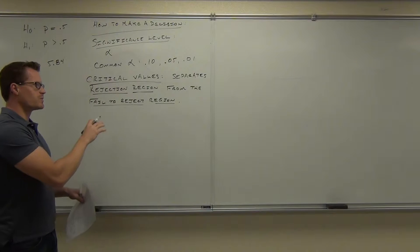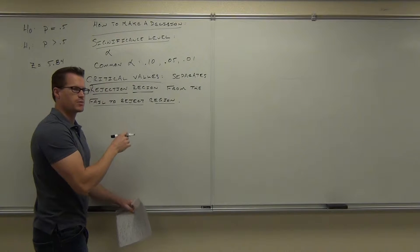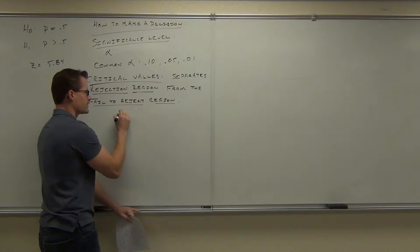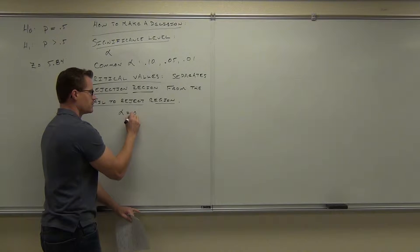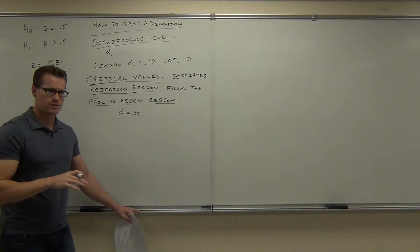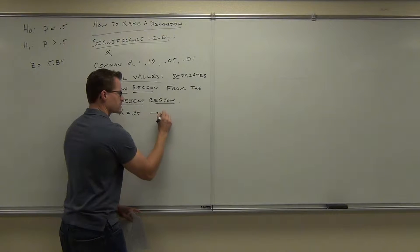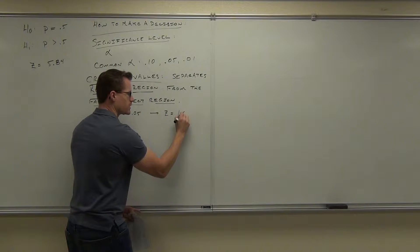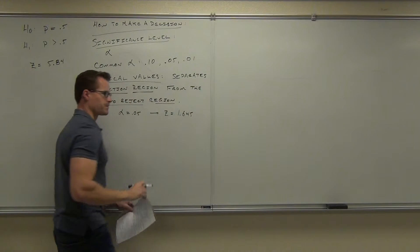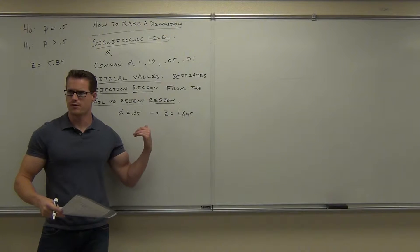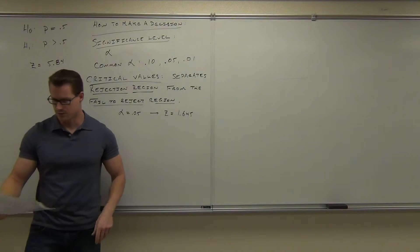We're going to be finding our critical values the same way that we would before. So if you have an alpha of 0.05, if we're talking about a right-tailed test, your Z critical value is 1.645. Do you remember how to find those? If we look at the 0.05 on the table, it's going to give us 1.645.